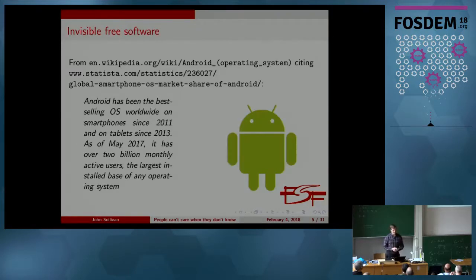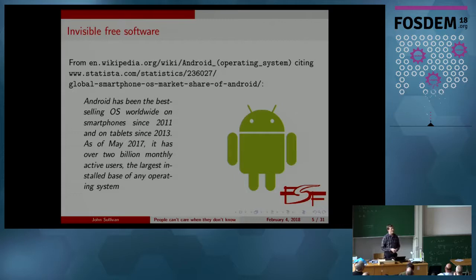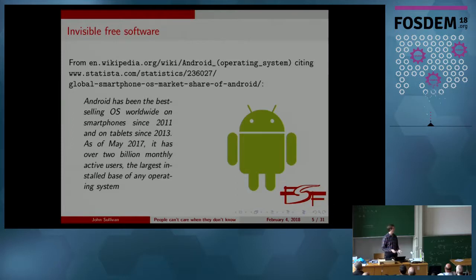Free software is invisible. One of the main examples I mean by that is Android. It's by far the operating system with the largest install base in the world today. No commercially available Android device is actually all free software — every device has some amount of proprietary software on it. And we know that a lot of the apps for Android are proprietary. But we also know that what makes Android go, the fundamental building blocks of it, are free software.